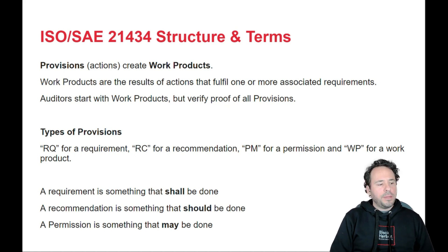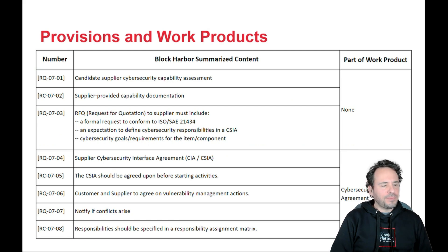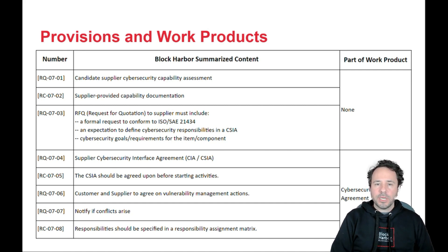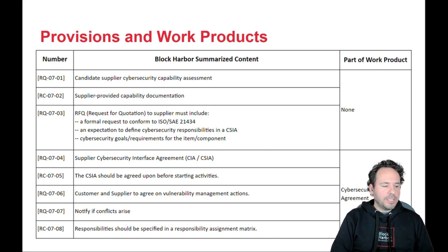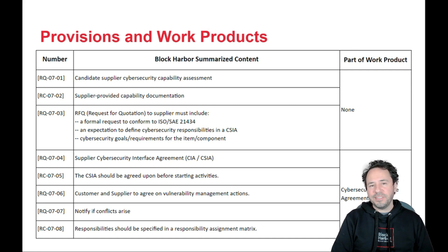Provisions are basically things that you need to do, and the work products are the proof of you doing those things. Here is a summarized view of the provisions and work products in this clause. You'll see that the top three do not contribute directly to a work product, and the bottom five do. The first one is measuring the cybersecurity capability of your supplier. The third one addresses the RFQ with the three additional things as stated before. Numbers four through eight deal with the cybersecurity interface agreement: number four listing specific requirements; five, stating that it should be agreed upon before you begin those activities; six, addressing vulnerability management; seven, notification of conflicts; and the last one specifying that the responsibilities should be listed in a responsibility matrix.